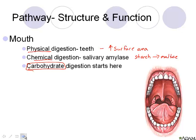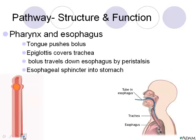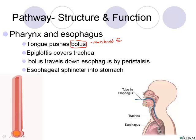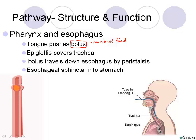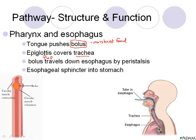Moving to the pharynx and esophagus: our tongue pushes what we call our bolus — the moistened, partially digested food — to the back of our throat. To make sure it doesn't go down our windpipe or trachea, the epiglottis, which is a little flap, covers up the airway to ensure no food goes down into our lungs.